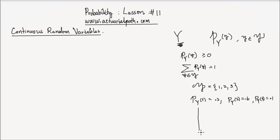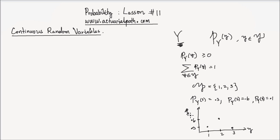I can plot the PMF. For y equal to 1, the PMF is 0.3. For y equal to 2, the PMF is 0.6. And for y equal to 3, the PMF is 0.1. So I have discrete points describing the probabilistic property of this random variable y.